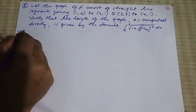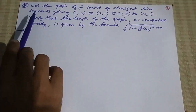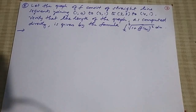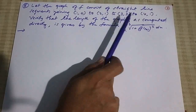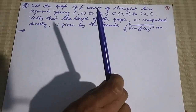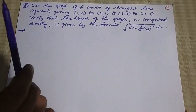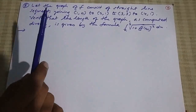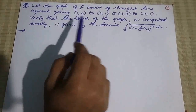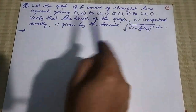The graph of f consists of straight line segments joining (1,0) to (2,1), then (2,1) to (3,3), then (3,3) to (4,1). So three line segments compile the graph from x=1 to x=4.